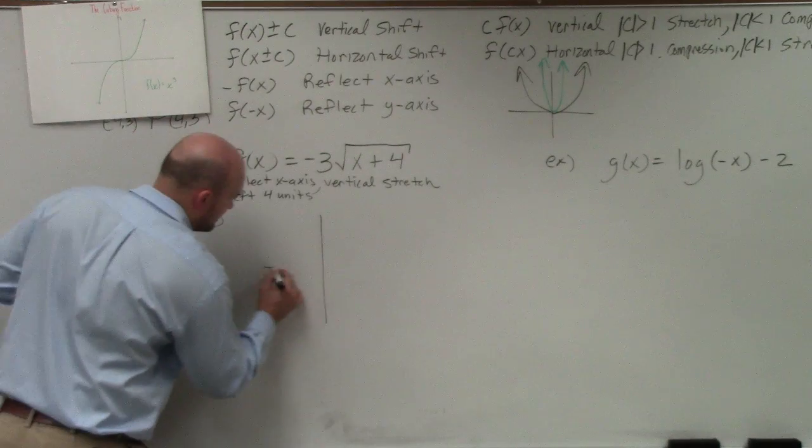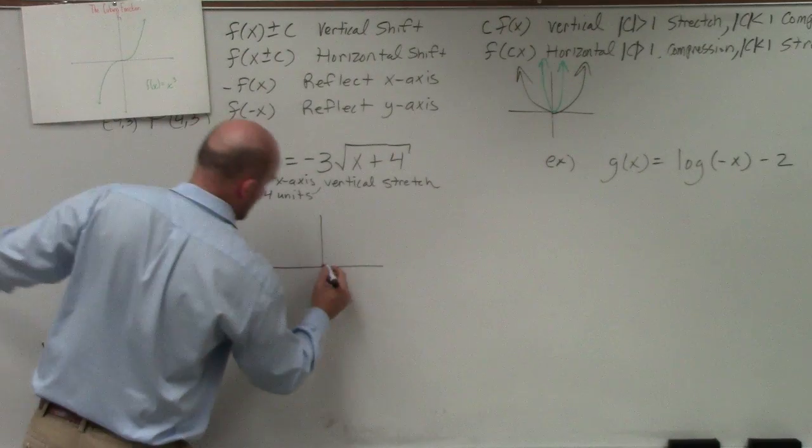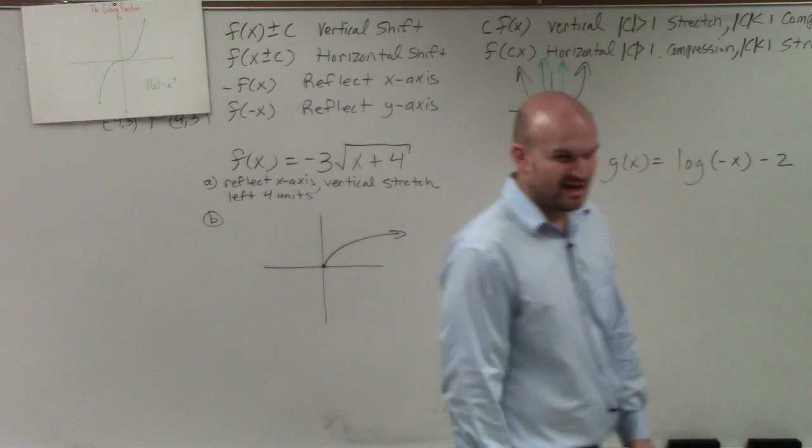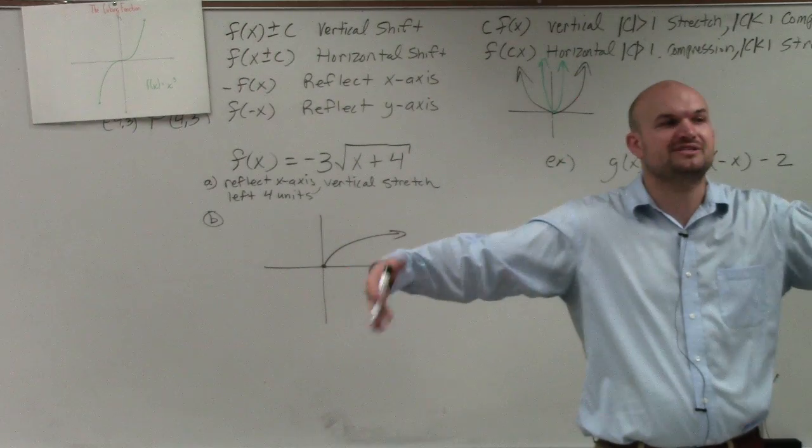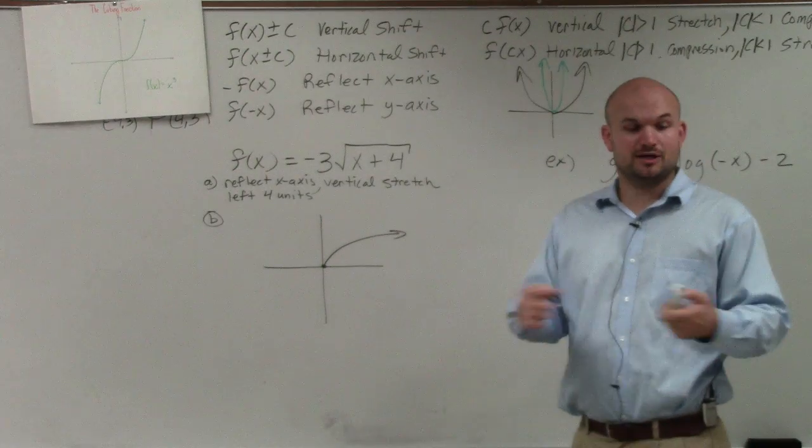This graph, the radical graph, is all the way over there. It looks something like that. Right? It doesn't need to be perfect. I said to sketch the graph, not make it perfect. So let's just apply all the operations.